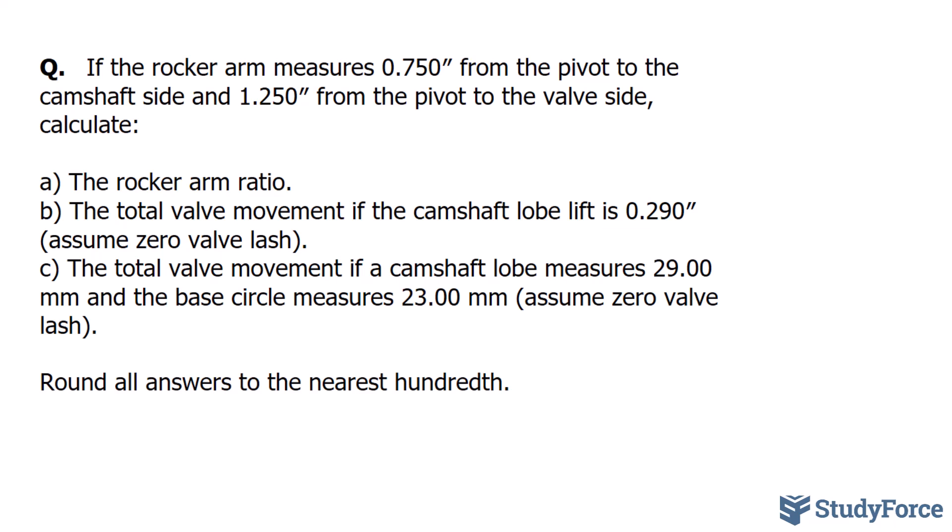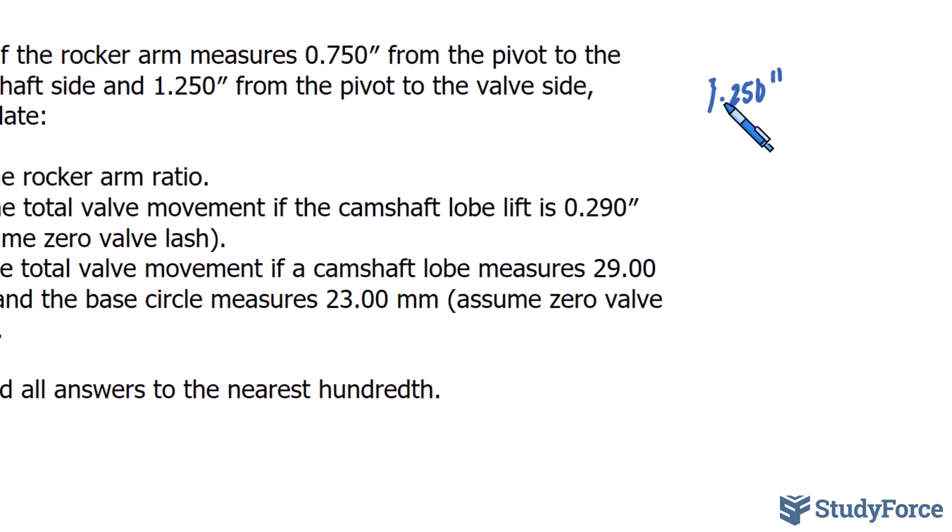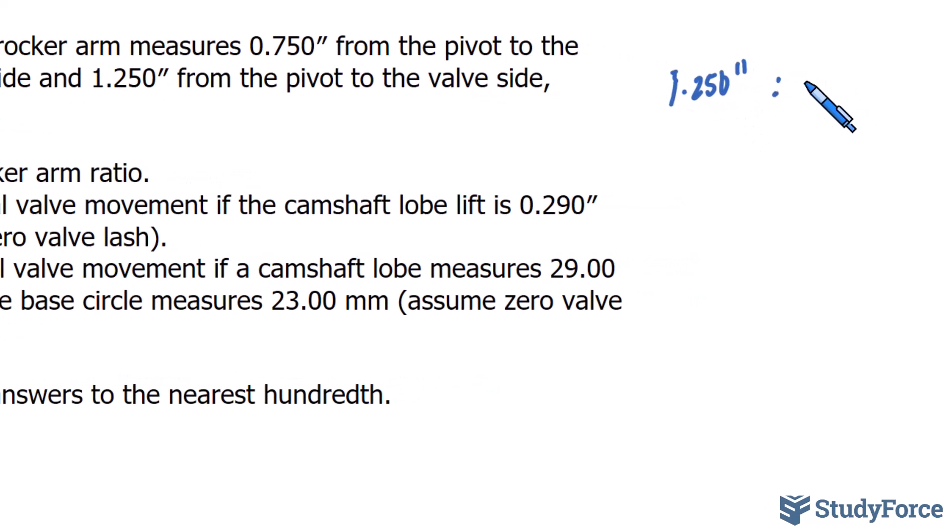To create our rocker arm ratio, we take the distance from the pivot to the valve side, which happens to be 1.250, and write that as a ratio to the length of the pivot to the camshaft side. So I'll represent that as 1.250 inches to 0.750 inches.